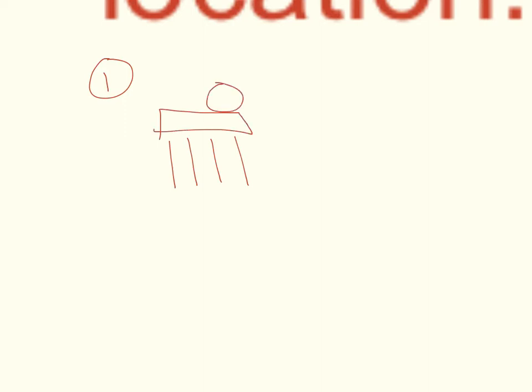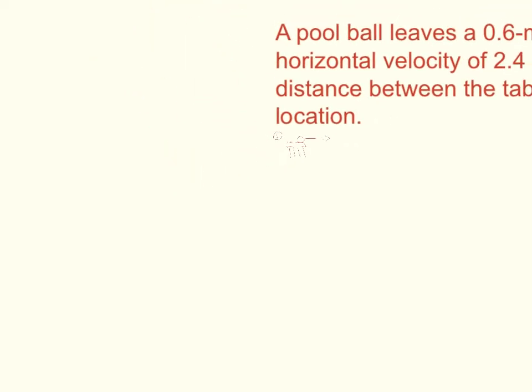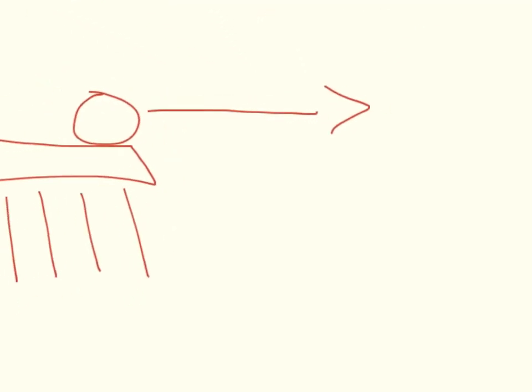There's going to be a ball on top and it says that the horizontal velocity is... oh that's not how I zoom out. Erase that really quickly. It says that the horizontal velocity is 2.4 meters per second. So I'm going to zoom back in. This is 2.4 meters per second and the height of the pool table is 0.6 meters.